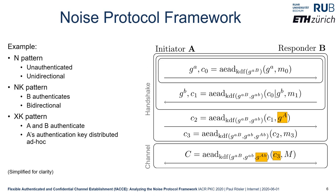To also authenticate A, the XK pattern adds a third handshake message in which A's long-term Diffie-Hellman share g^A is encrypted from A to B. This hides the identity of initiator A towards outsiders, and A authenticates towards B by using g^AB as part of the key derivation for all future encrypted payload.